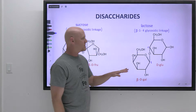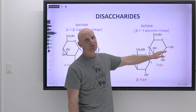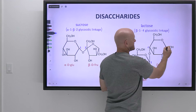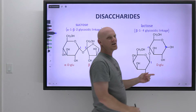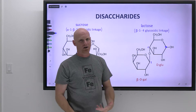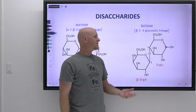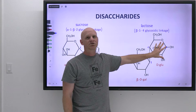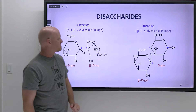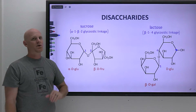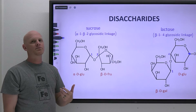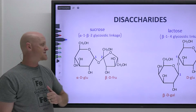Typically, when the anomeric carbon is free — like it is for lactose — you'll often see the OH drawn off to the side, not up or down, because in solution you get a mixture of both alpha and beta due to mutarotation. But that's not the case in sucrose. In sucrose, the anomeric carbon is involved in forming the glycoside on both sides.